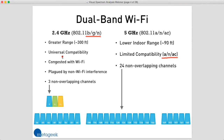Since 2.4 gigahertz has been the default band for so long, it is highly congested with Wi-Fi. There are a lot of Wi-Fi devices that operate there, so there's just a lot of activity that we have to contend with and live with — and we're going to talk about that a lot more in just a minute.